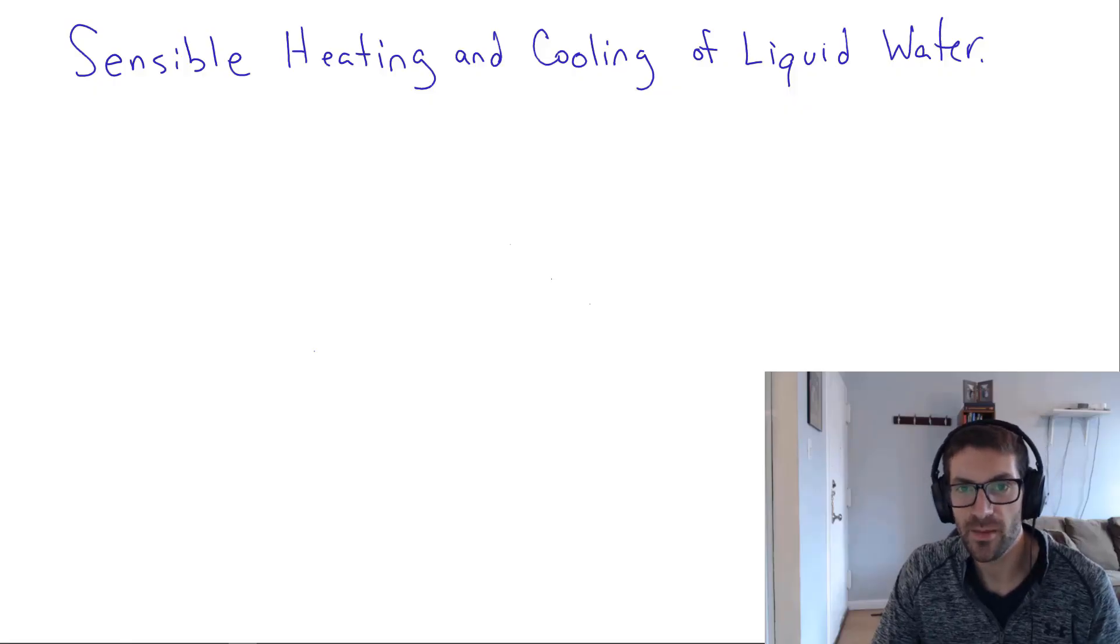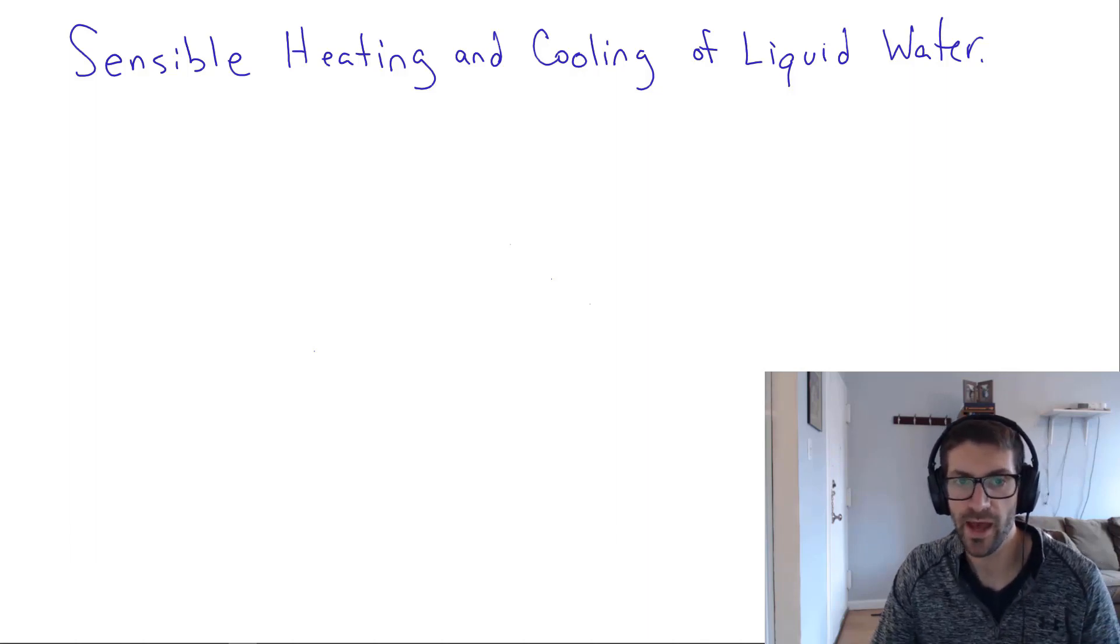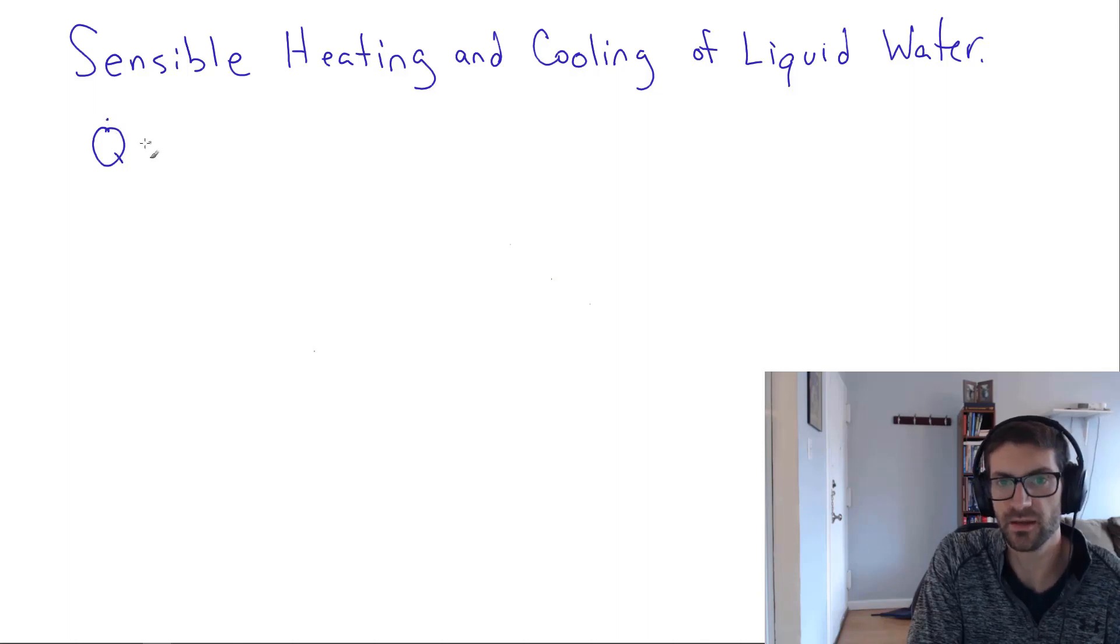In today's daily insight, we're going to talk about the sensible heating and cooling of liquid water. So we talked about some rules of thumb for heating and cooling of air, but how about the heating and cooling of water? Well, there's also a rule of thumb for that. And we say that the amount of heating or cooling done by water can be calculated as 500 times GPM times delta T.